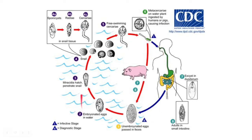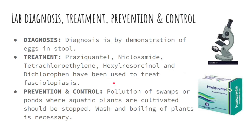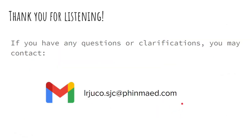The life cycle of Fasciolopsis buski is almost the same as Fasciola. Unembryonated eggs in feces enter water, become embryonated, hatch into miracidia, penetrate the snail, develop into sporocyst, radiae, and cercaria inside the snail. The cercaria exits into water, encysts on aquatic vegetation as metacercaria, which is ingested by the definitive host — humans or pigs — develops into adults in the small intestine, and the cycle repeats. For treatment: praziquantel, niclosamide, tetrachloroethylene, hexylresorcinol, and dichlorophen have been used. Prevention includes stopping pollution of swamps or ponds where aquatic plants are cultivated, and washing and boiling plants before consumption.